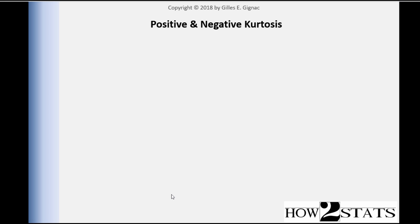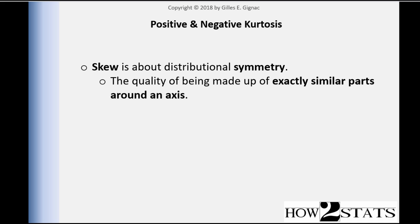In this video, I'm going to talk about what kurtosis is, and I'm also going to give you examples of what positive and negative kurtosis look like. Before I do so, I'm going to remind you about skew, which was covered in a previous video. Skew is about distributional symmetry, and symmetry is the quality of being made up of exactly similar parts around an axis. That's what symmetry is, and symmetry is related to skew.